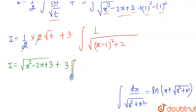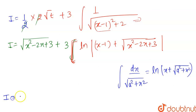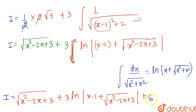Applying the standard formula to the second integral, we have ln of (x minus 1) plus the square root of (x squared minus 2x plus 3). So finally the answer is i equals the square root of (x squared minus 2x plus 3) plus 3 ln of (x minus 1 plus the square root of (x squared minus 2x plus 3)) plus c, where c is the integrating constant. This is the answer for the above integration.